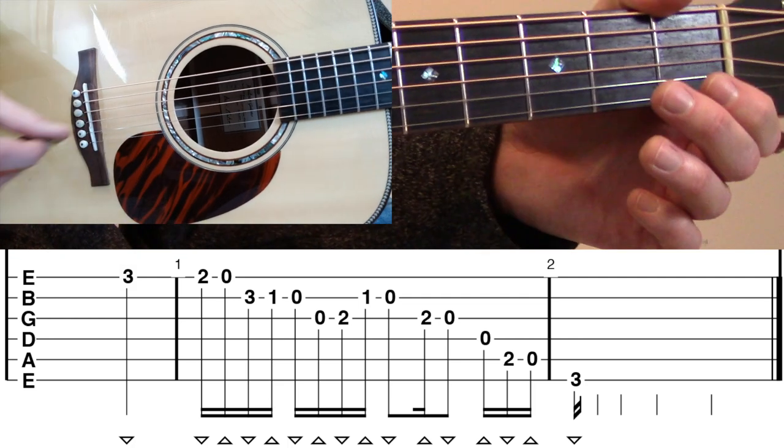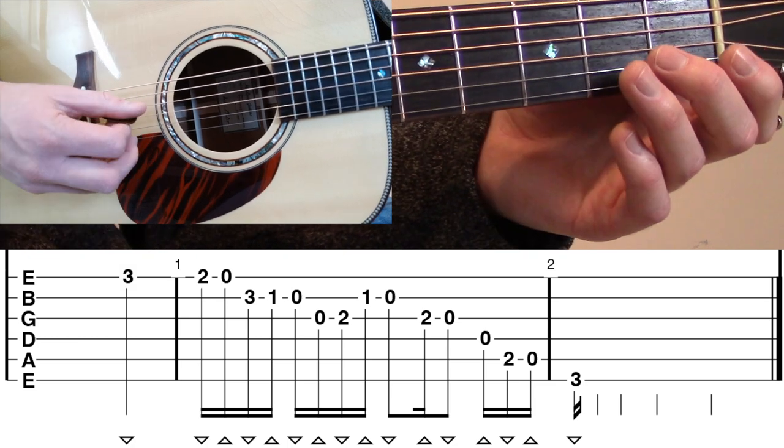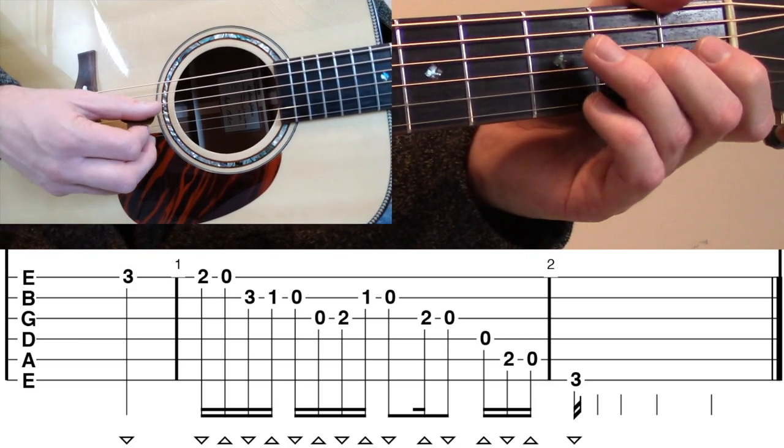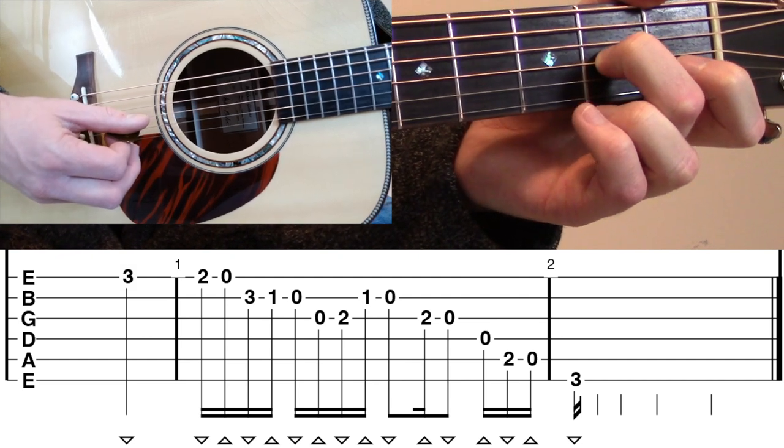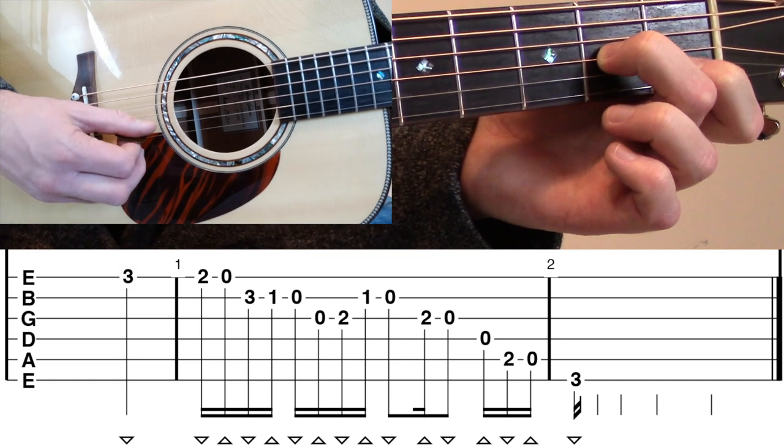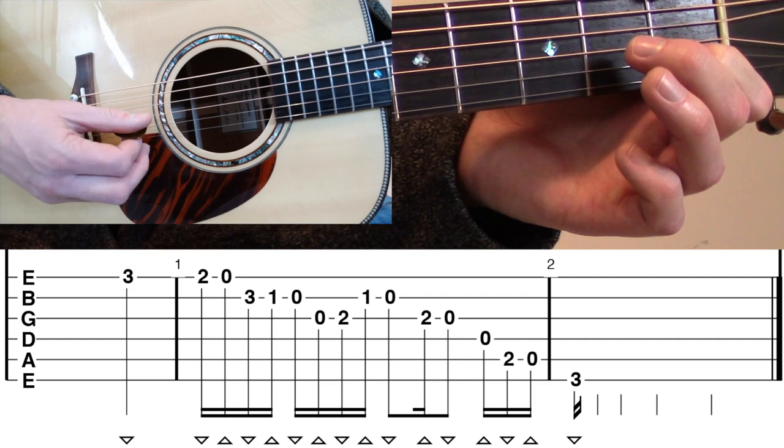Okay, and then right after that open B there, we have an upstroke on the open G to second fret G, and I like to play that second fret G with my middle finger so that I can immediately place my index finger on that first fret B to open.